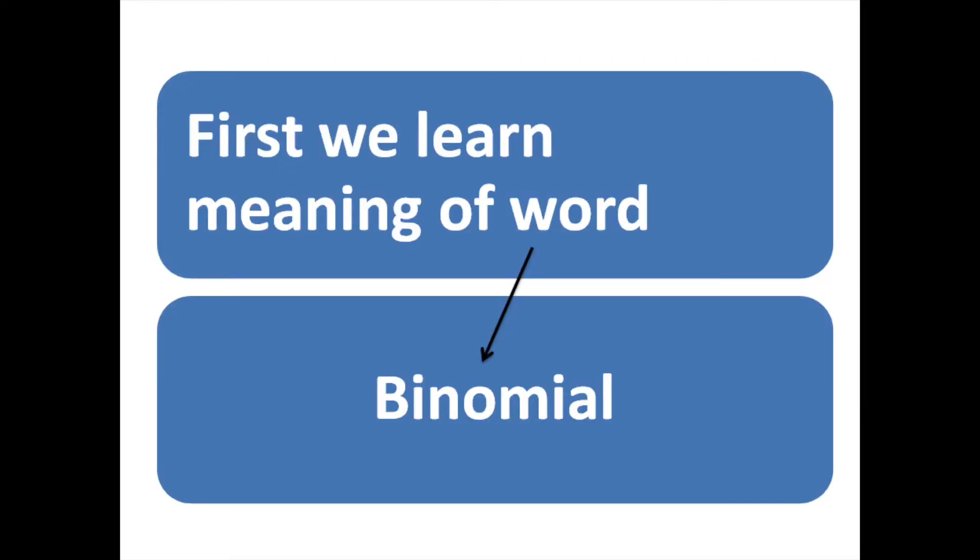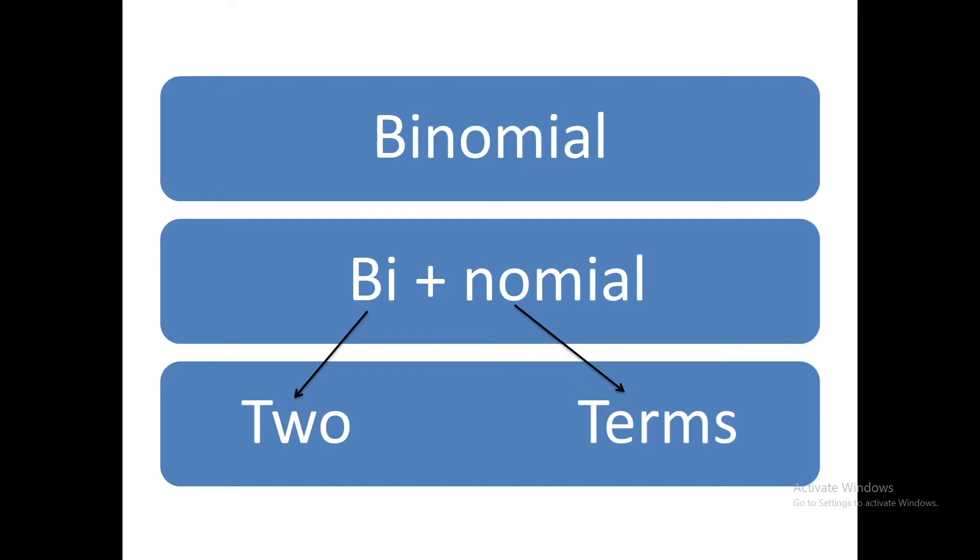After the layout of discussion, we move toward the first point, that is learning the meaning of word binomial. The word binomial has two parts: bi and nomial. Bi means two and nomial means terms.